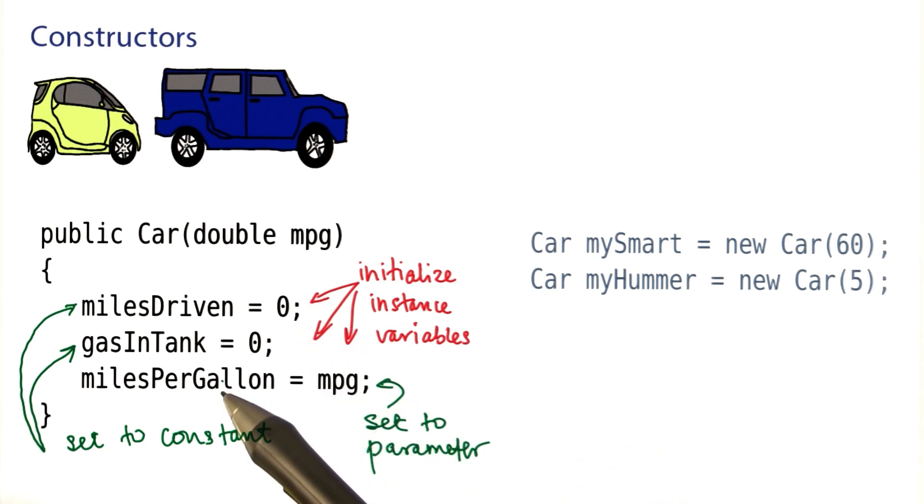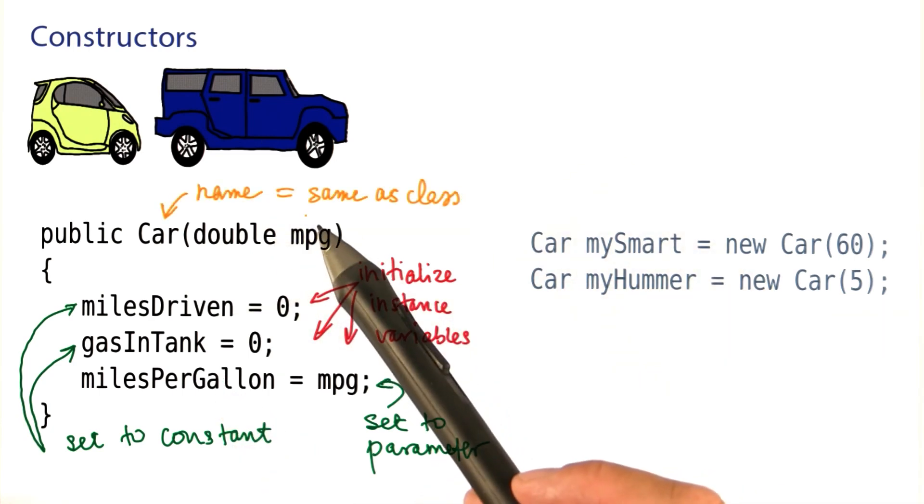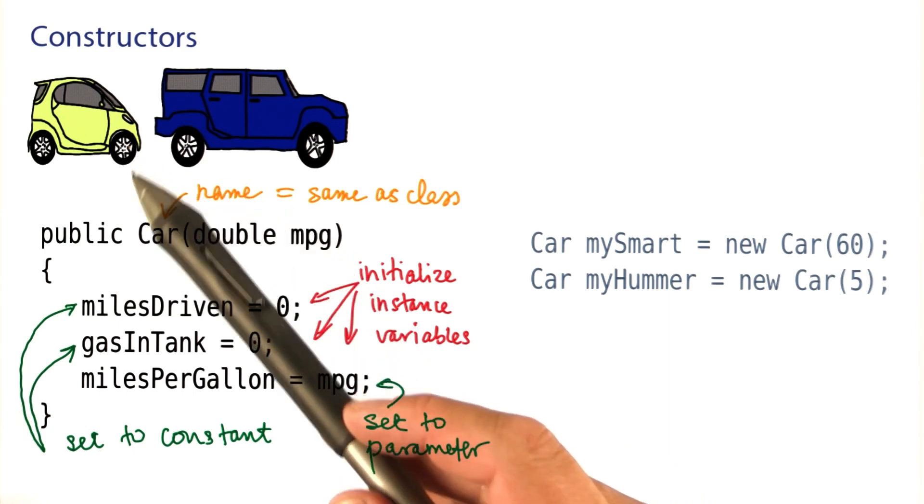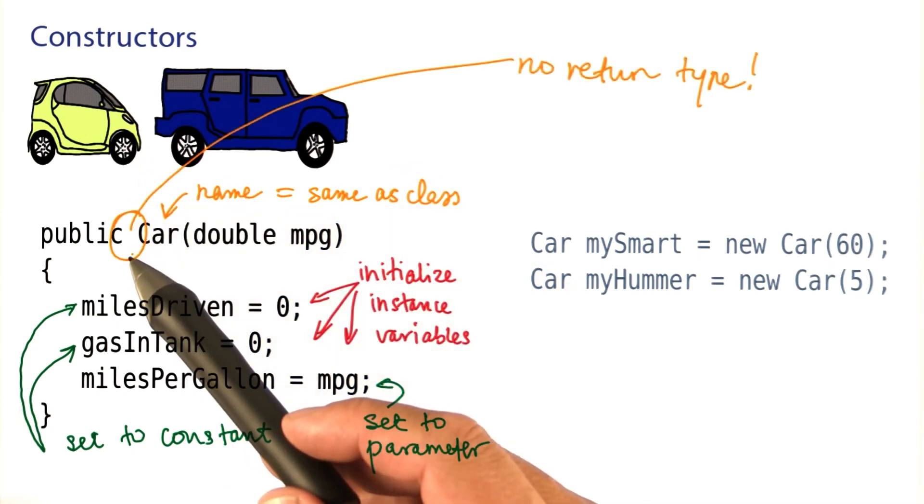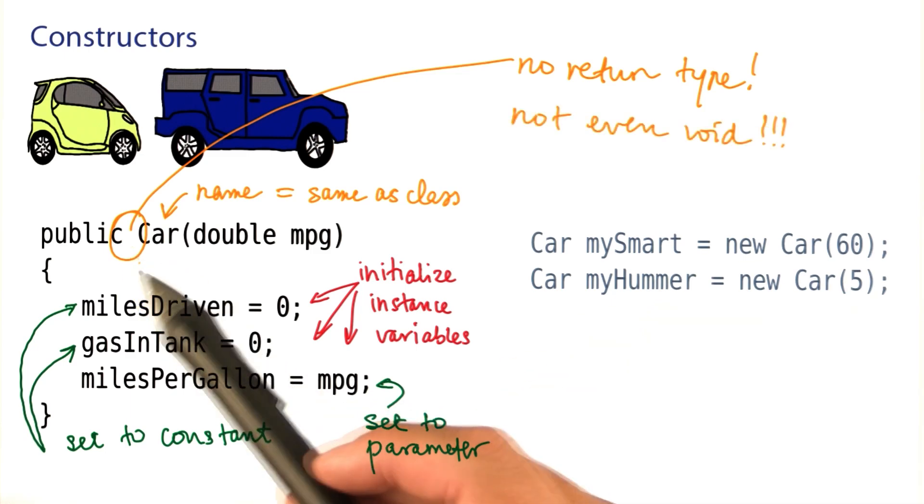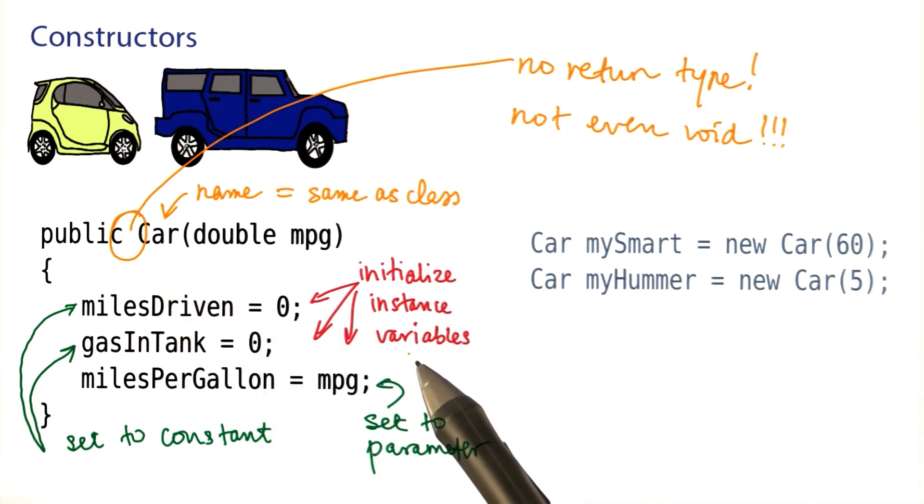A couple of things to pay attention to when you define a constructor. Note the name. It's the same as the class name. The class is called car. The constructor is called car. Also note that there's no return type at all. Not even void. A constructor is not a method. It does not return any value. Instead, the job of a constructor is simply to initialize the instance variables.